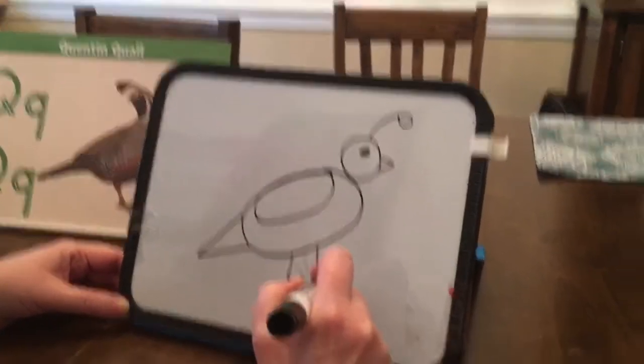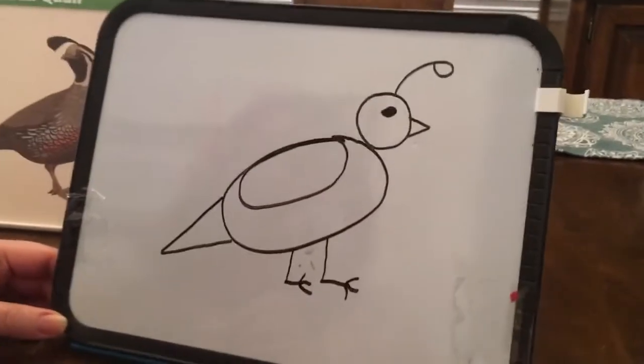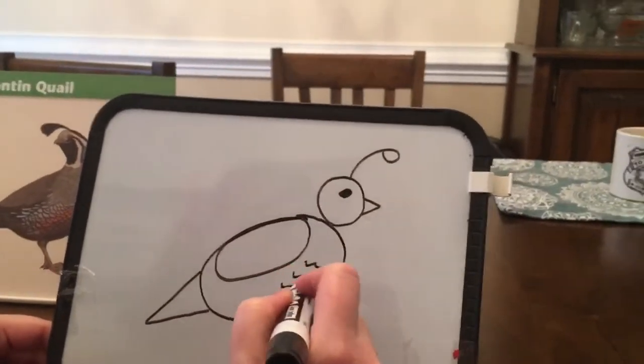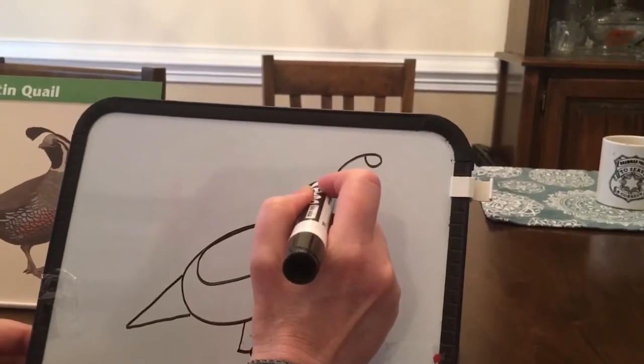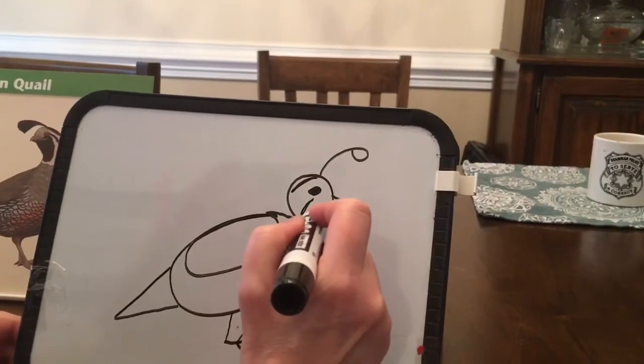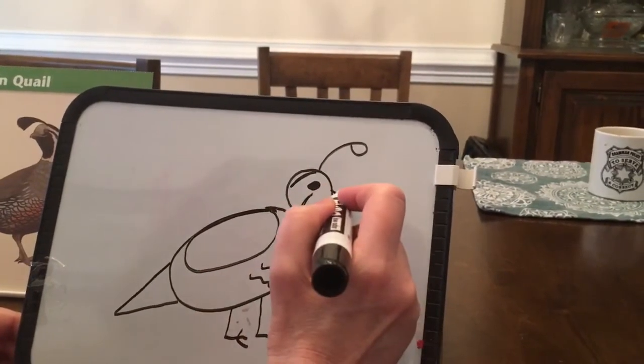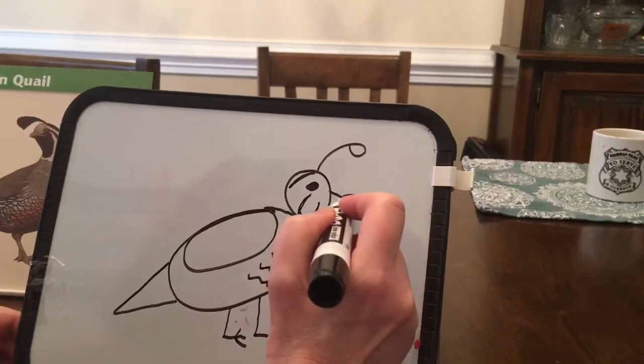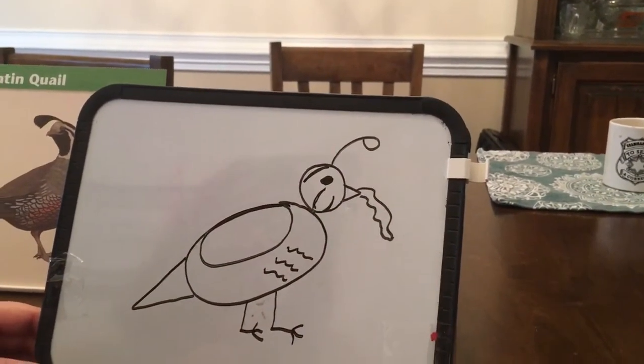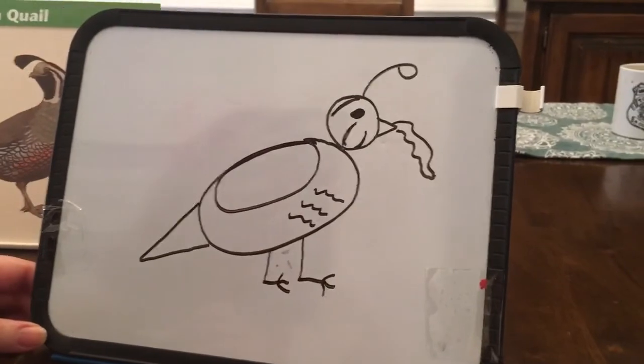And there you have Quentin Quayle and you can give him some little decorations if you want. He has some black stripes up here on his head so you can give him some of those if you like. And if you want, you can even give him a little worm that he's going to have for his breakfast. Draw a little squiggly line like that. And there you have Quentin Quayle. Well, thanks for watching.